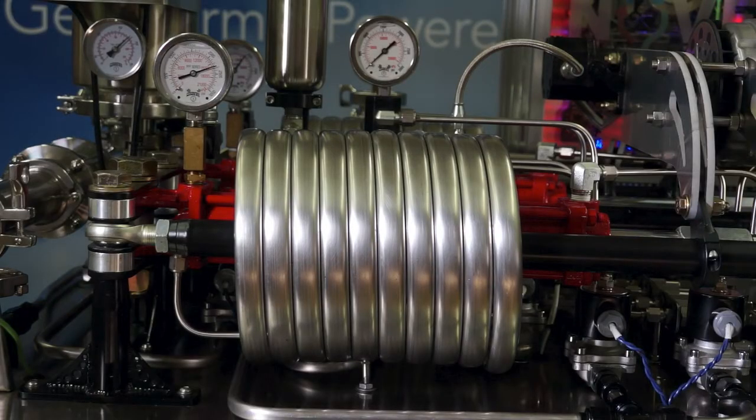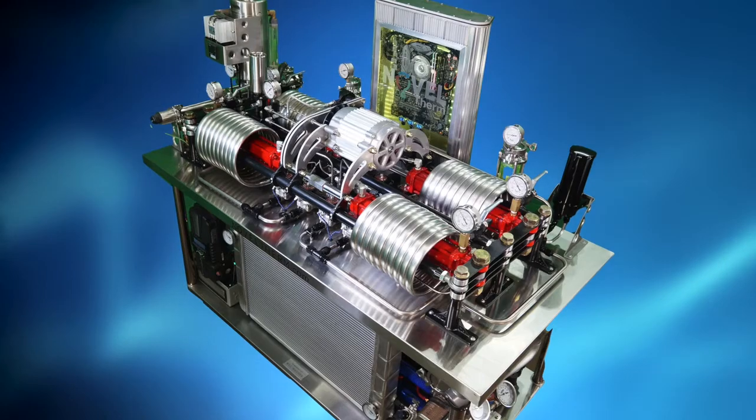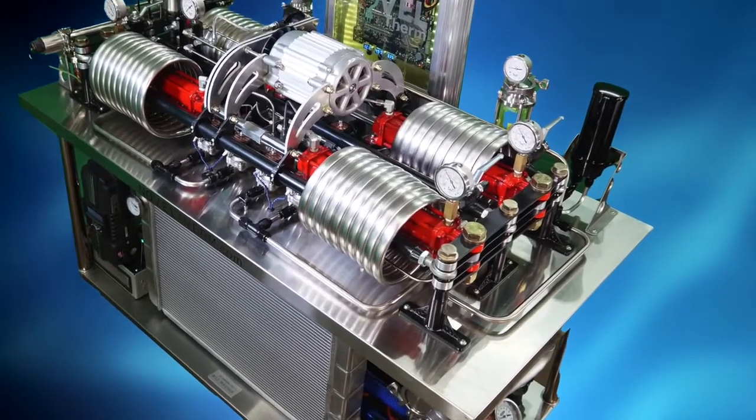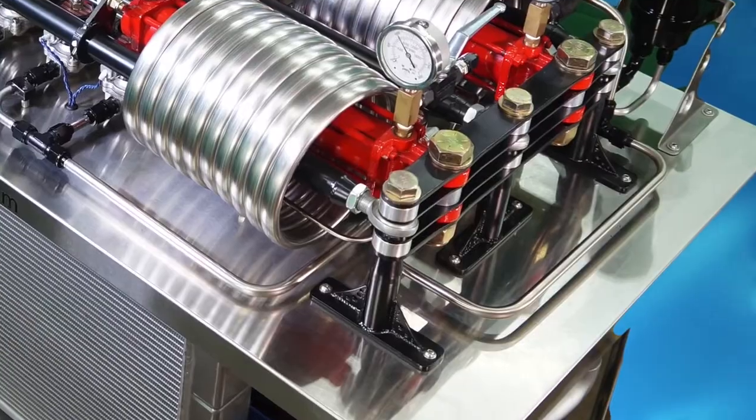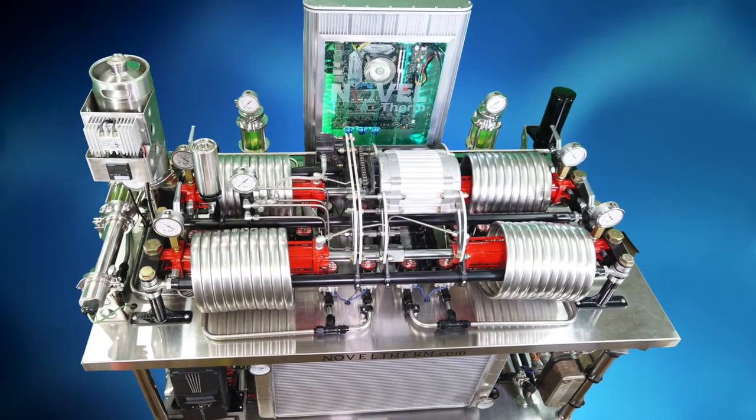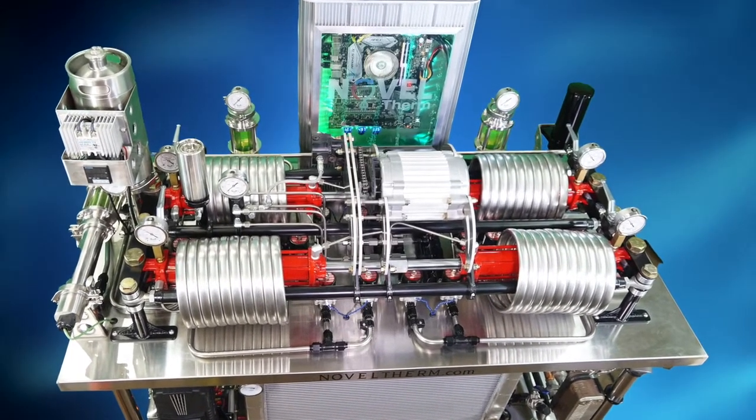These coils are shell and tube heat exchangers, which are essentially a tube within a tube. The inner tube contains a special highly expansive working fluid. The space between the tubes cycles hot water to expand the working fluid, and then cold water to contract it.